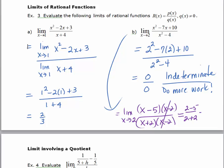which equals negative 3 fourths. So the limit as x approaches 2 of this rational function is equal to negative 3 fourths.